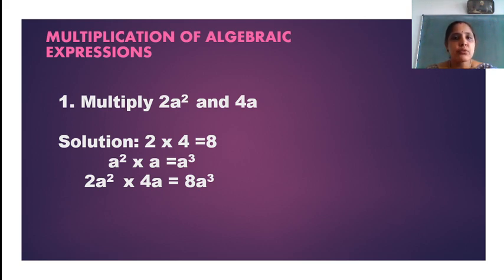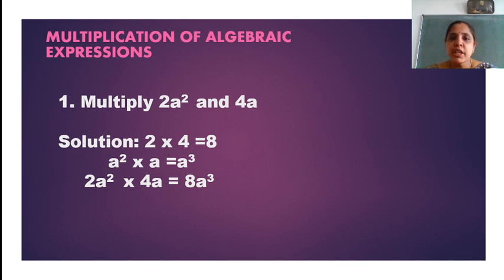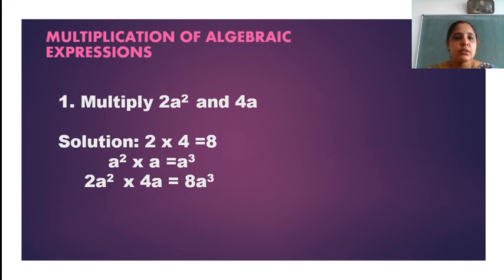Coming to the solution: the first basic rule of multiplication states that the numerical coefficients of the two algebraic expressions have to be multiplied, and the powers on the variable should always be added. So 2 into 4 gives me 8. A squared into A gives me A cubed, because the power on A squared is 2 and the power on A is 1, so 2 plus 1 gives me 3. That is how I obtain the solution as 8a cubed.